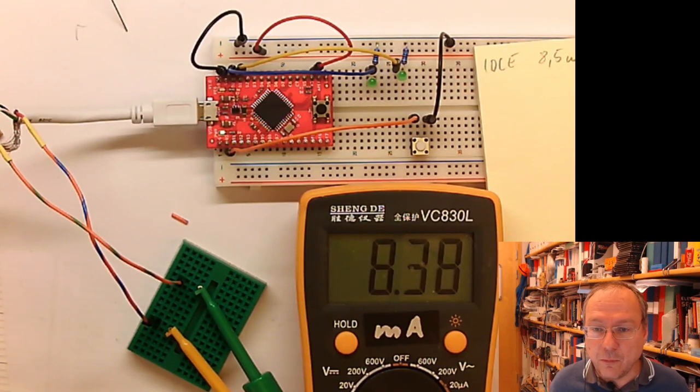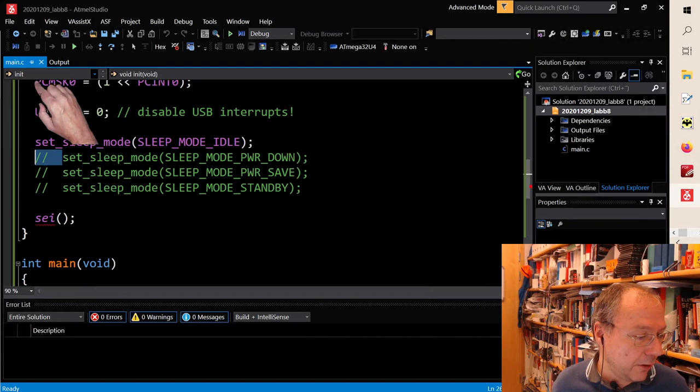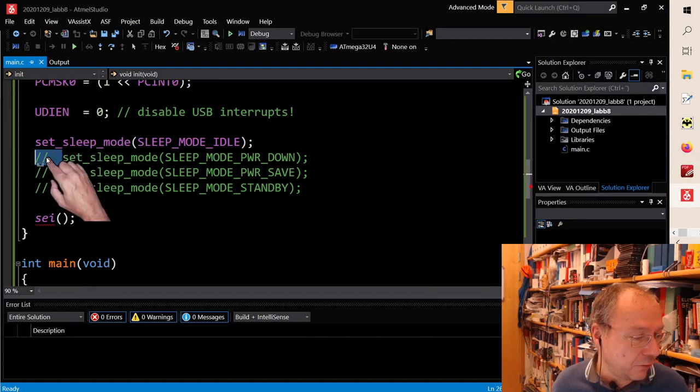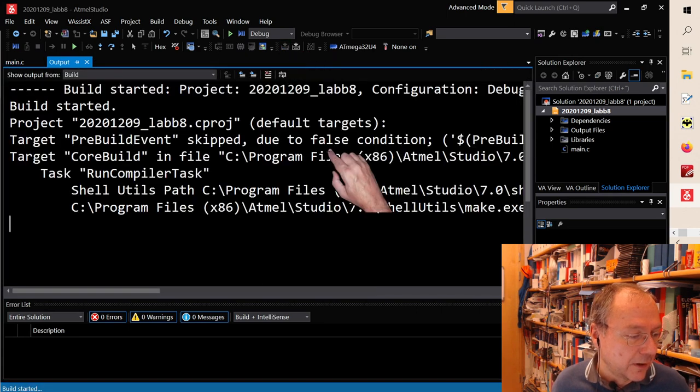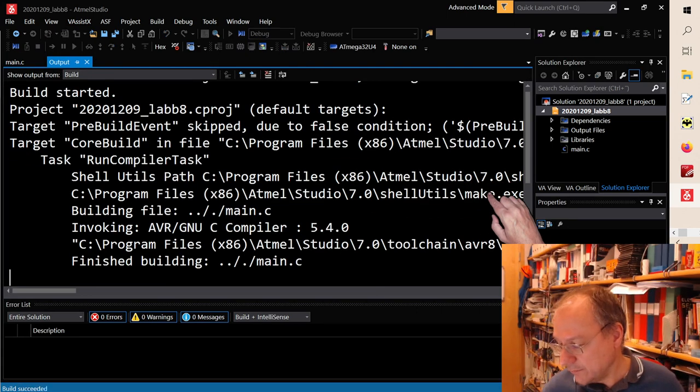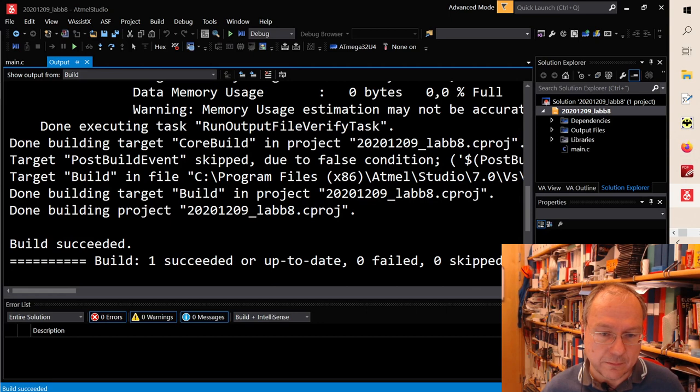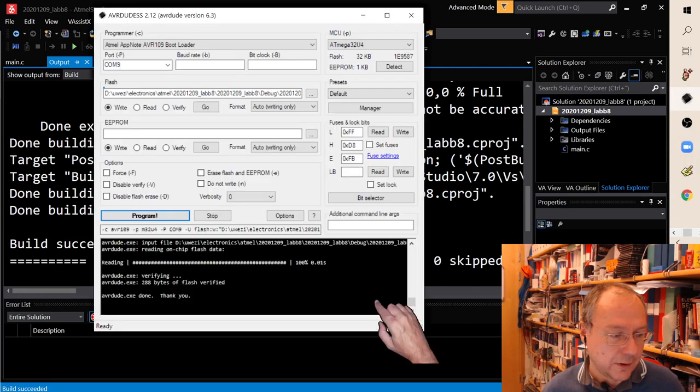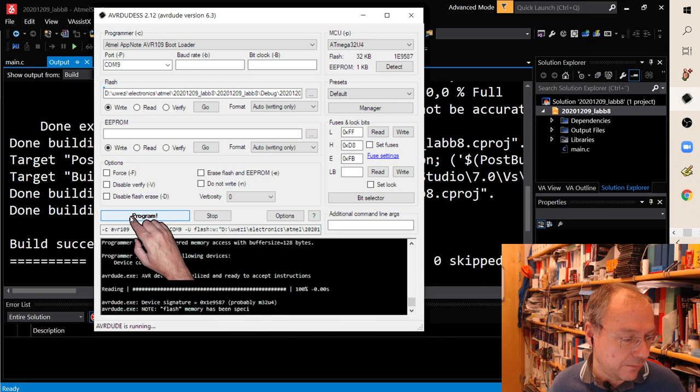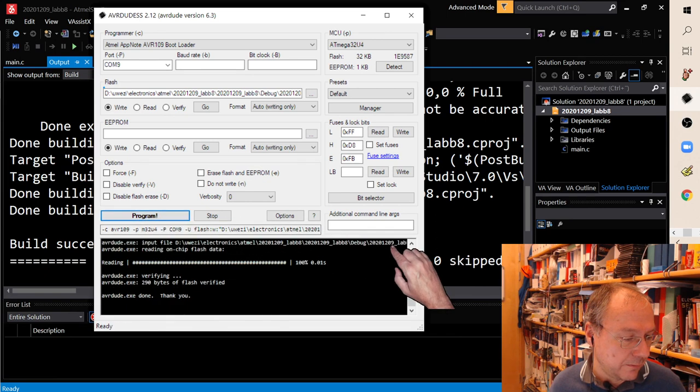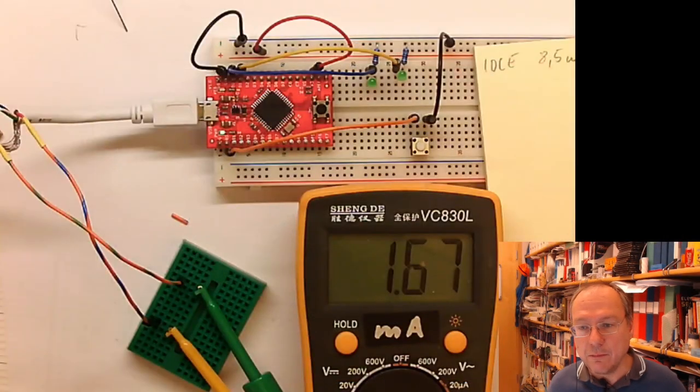Now if we go back into the code and instead set or choose the power down mode for sleep mode, compile the code, upload the code, and have a look at the multimeter. Now we are down at 1.6 milliamps.